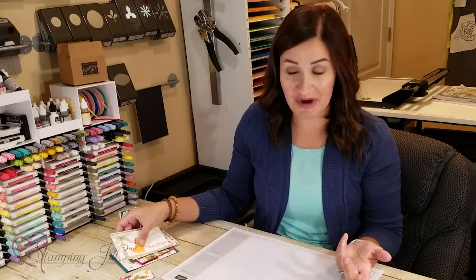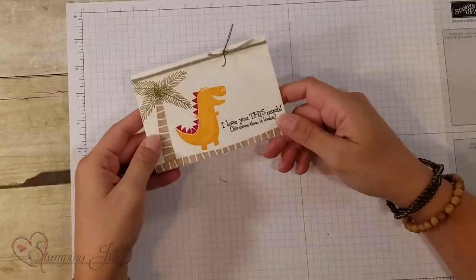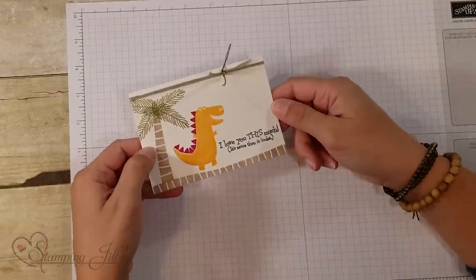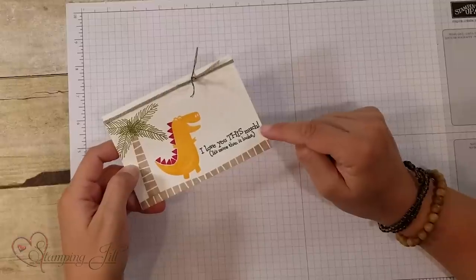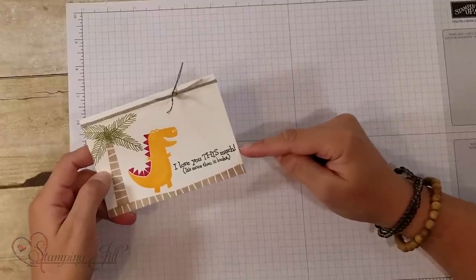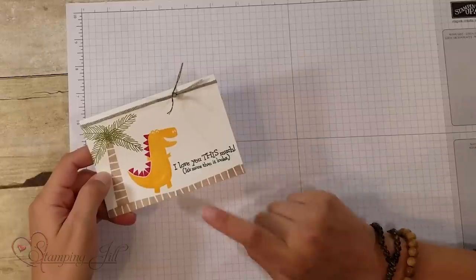So let me show you some projects that I made using this suite of products. I started with some simple stamping, and I made this little T-Rex guy. This is probably one of my very favorite sayings in this stamp set, when it says, I love you this much. And then it says, it's more than it looks